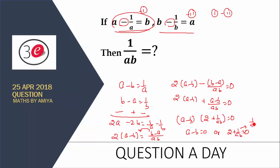From here we can say 1/ab is minus 2. So this is the answer. Our answer of 1 upon ab is minus 2, and this is our answer to this question.